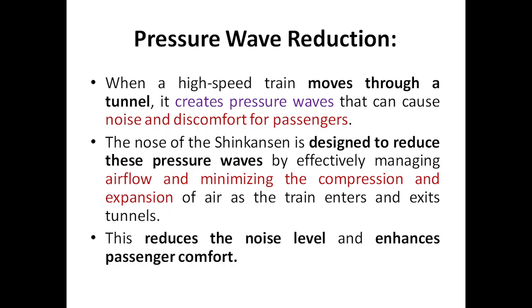Pressure wave reduction — when this high-speed train moves into a tunnel, it creates a lot of pressure waves. Because of these pressure waves, there is noise and discomfort for passengers. Even a normal train traveling at 60 to 100 kilometers per hour creates noticeable noise; for a bullet train traveling 2 to 3 times faster, this problem is much greater if not addressed by technological design inspired by the kingfisher beak.